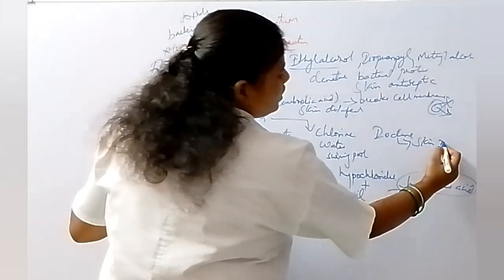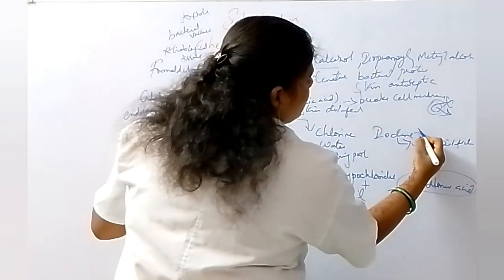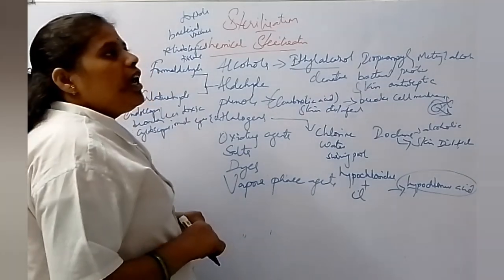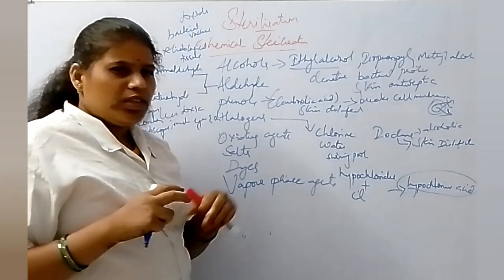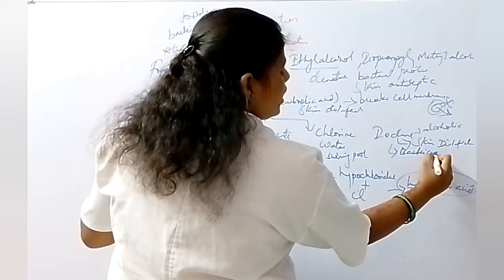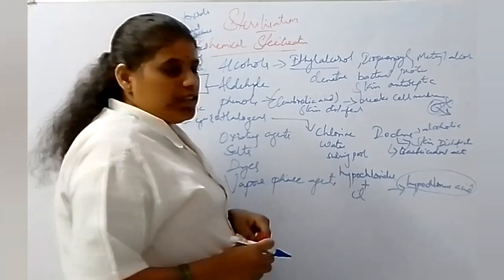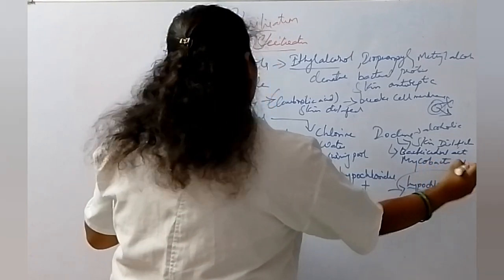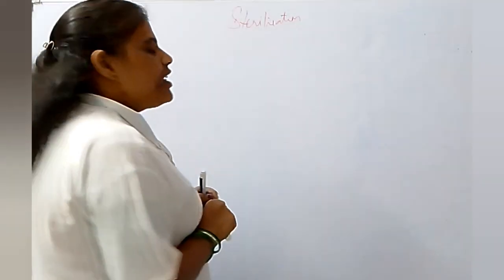Iodine is used as a skin disinfectant in hospitals and for cleaning purposes. It is alcoholic in nature and has bactericidal activity. It is active even against Mycobacterium tuberculosis. That covers the halogens — chlorine and iodine.